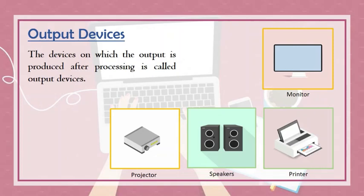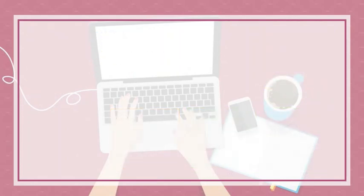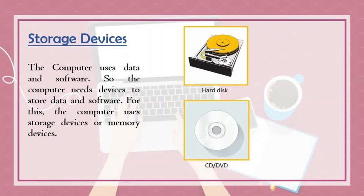Then the printer. The printer helps us to take the output on a sheet of paper. This printed paper copy is called a hard copy, like a document. A photocopy of any document is also said to be a hard copy. Speakers give output in the form of music or sound which you listen to on your computer. A projector shows the output on a very large screen so that many people can see it at the same time.